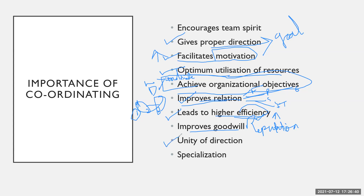Coordination brings unity of direction. All departments are working towards each other and helping each other, so there is unity of direction. It also promotes specialization — the experts in each department give their specialized knowledge to all the other employees and teach them how to do their best work. If the head is coordinating with the subordinates, there will be specialization in the organization. In this way, coordination is important in the organization.